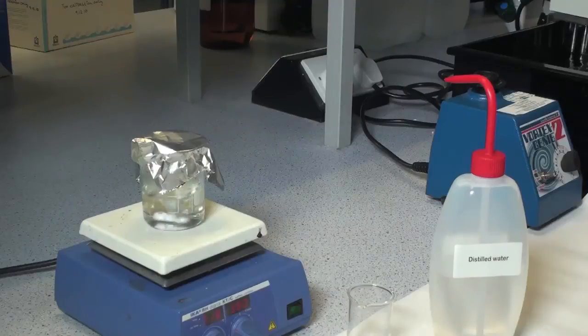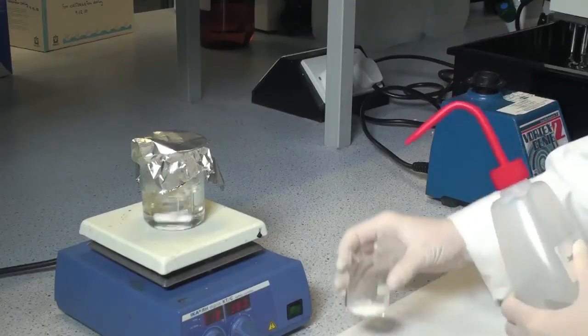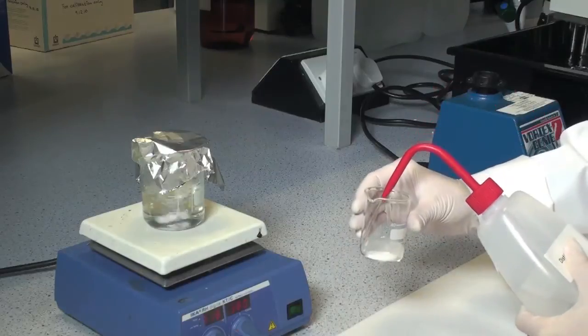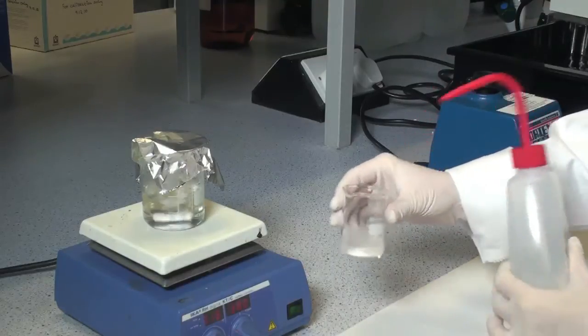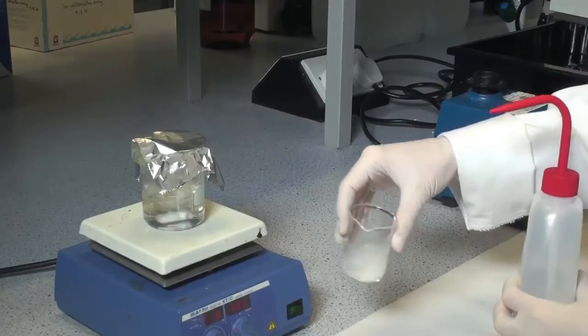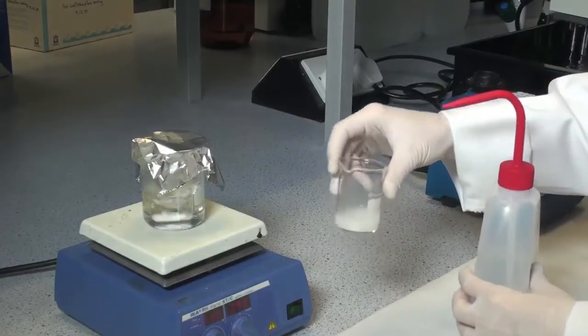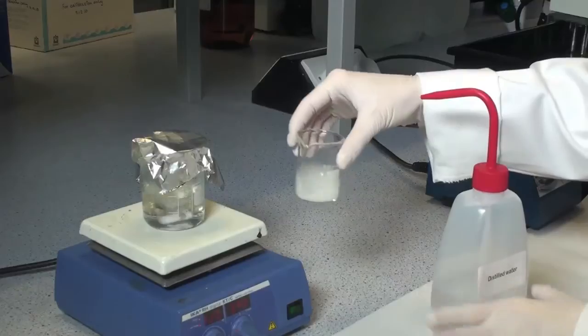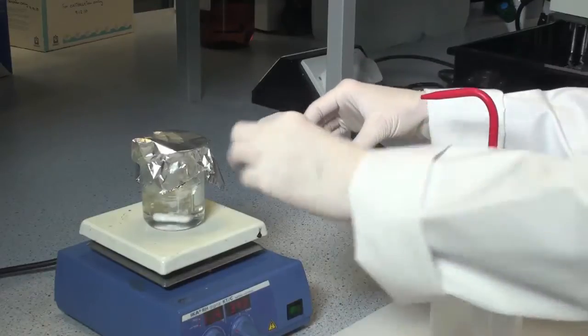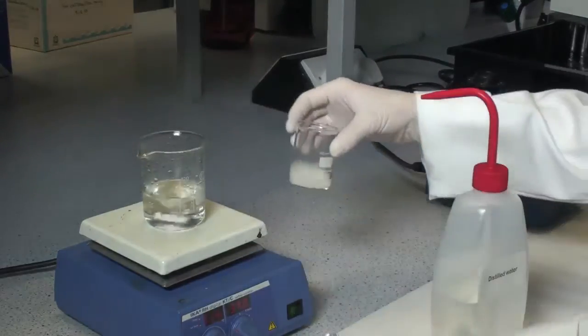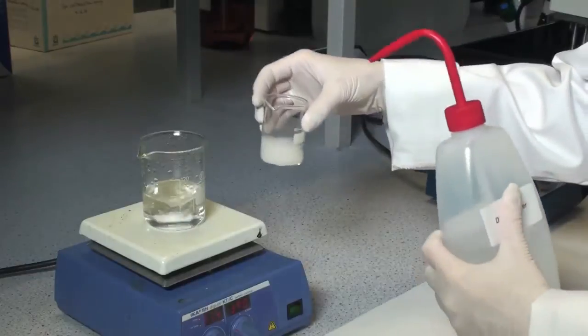Suspend 1 gram of starch in approximately 10 ml of distilled water. Then pour this uniform slurry into approximately 70 ml of vigorously stirring boiling water.